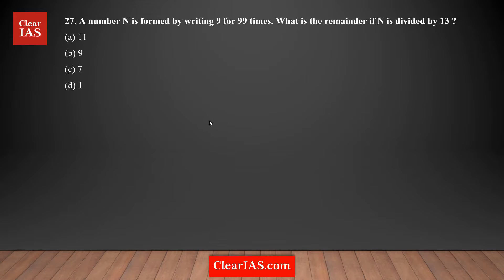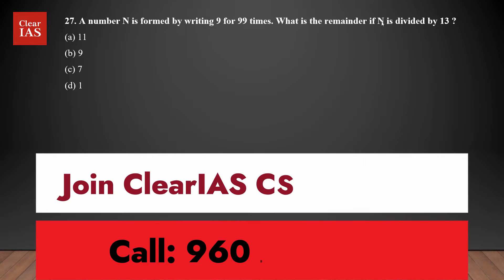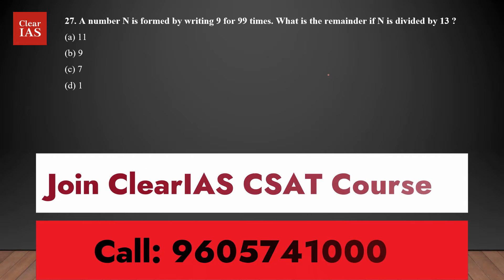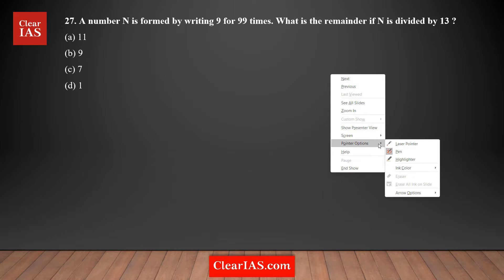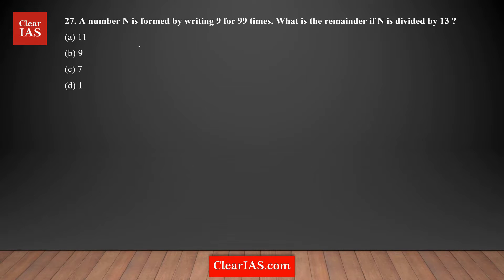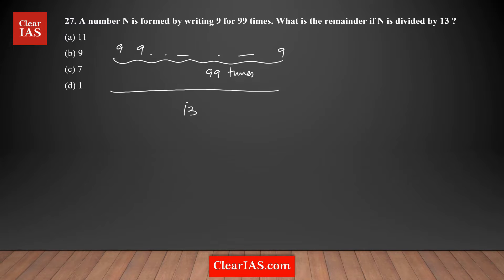This is definitely not an easy question to solve. When you read the question, the number n is formed by writing 9 a total of 99 times. I need to find what is the remainder if n is divided by 13. Basically, n is 9 written 99 times, and we are dividing this by 13 to find the remainder.